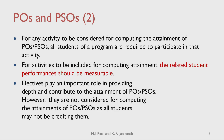For activities to be included for computing the attainment, the related student performance should be measurable. This becomes important when we consider co-curricular and extracurricular activities. Even if all the students are participating in these activities, in order to consider them in computing the attainment of POs and PSOs, we must have appropriate rubrics through which their performance is measured and quantified. Thus we need two considerations: all students must participate and their performance must be measured.